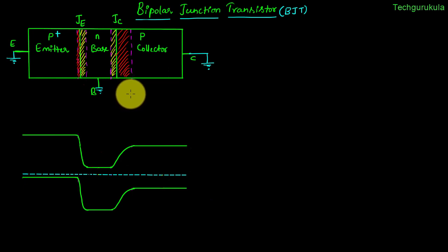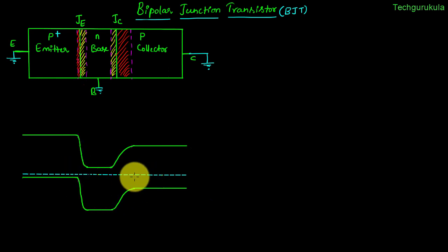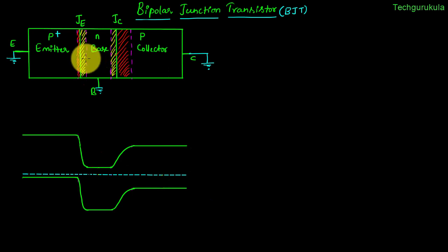Till now we have seen BJT under equilibrium, where all three terminals are connected together or all of them are grounded. In that case the energy band diagram looks like this and the depletion widths are logically shown on this BJT. In this video we will see how BJT functions when we apply bias to these junctions.